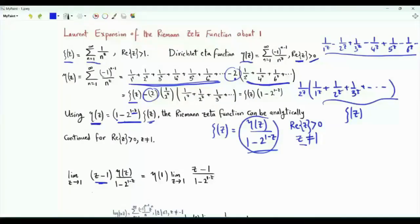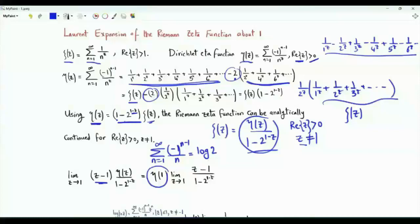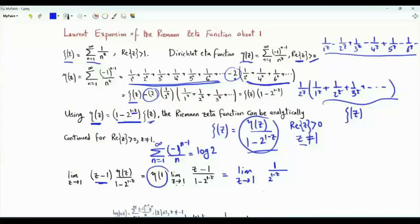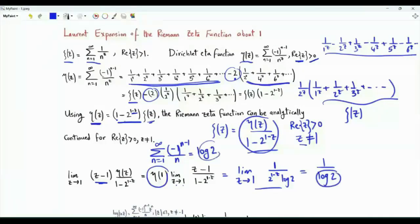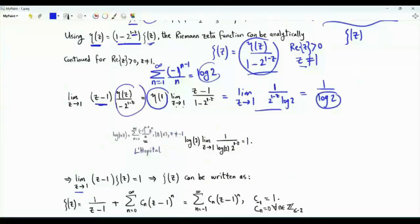If we multiply this ratio by z minus 1 and then take the limit as z tends to 1, we have eta of 1, which is the sum n from 1 to infinity of minus 1 to the power n minus 1 divided by n, and this is the natural logarithm of 2. Then we need the limit as z tends to 1 of z minus 1 over 1 minus 2 to the 1 minus z. Applying L'Hôpital's rule, the numerator derivative is 1, and downstairs we have 2 to the 1 minus z times the natural logarithm of 2. This limit is 1 over log 2 times log 2, that's 1. Therefore the limit of zeta of z times z minus 1 as z tends to 1 is 1, meaning zeta of z has a simple pole with residue 1 at z equal to 1.